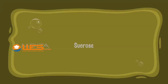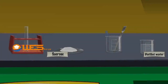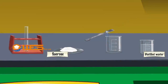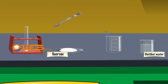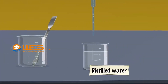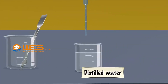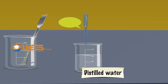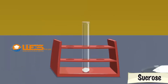Sucrose. Using a spatula, take a small quantity of sucrose and put it in a test tube. Take about 3 ml of distilled water in a dropper. Pour it into the test tube and shake the test tube well.